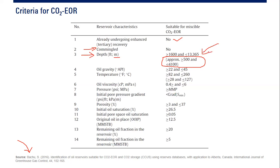The fourth criterion is oil gravity, ranging from 22 to 45 API. Below 22 would be heavy oil, which is not desirable for CO2 EOR; very light oil is also not ideal. The fifth criterion is temperature: above 82°F but below 260°F — not too cold, not too hot — which converts to approximately 28 to 127°C.